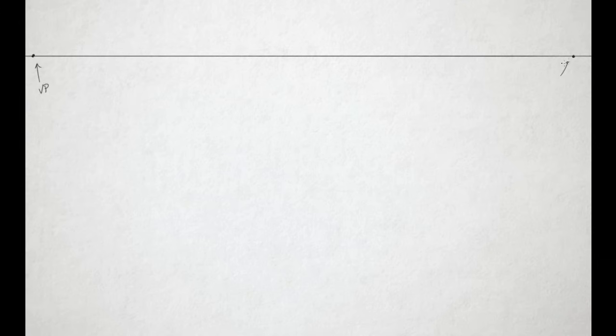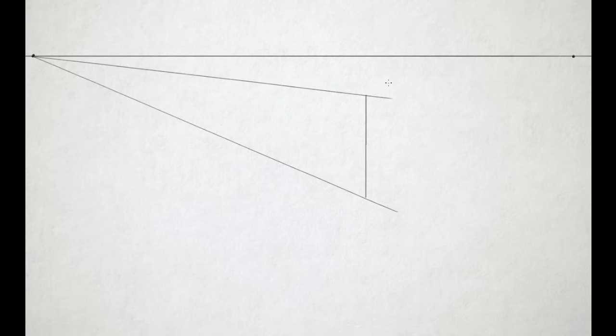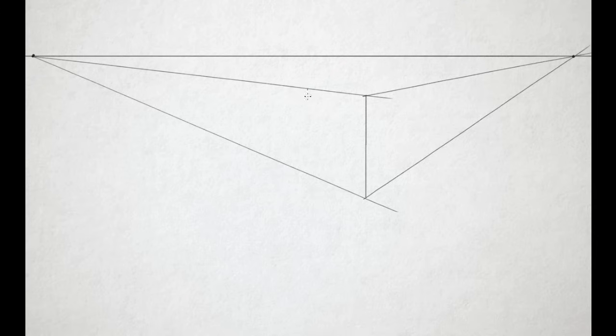Now let's look at a practical example by drawing a small city. We'll start again with the horizon line and place two vanishing points far apart from each other so we have ample space between them and no distortion occurs. For this example we'll draw some basic buildings — basically cubes with windows and doors added. So we'll start with a corner, then draw two lines from each end to the vanishing point on the left, and repeat this with the vanishing point on the right. Next we need to define where the building ends by drawing straight up and down vertical lines.